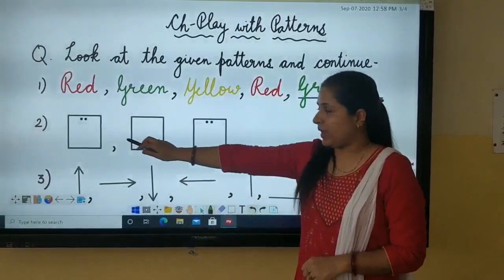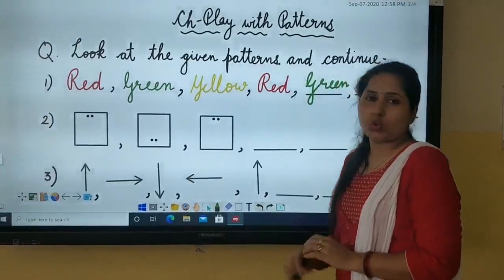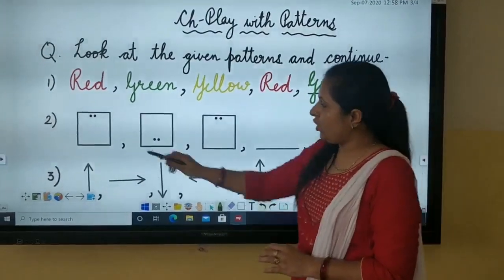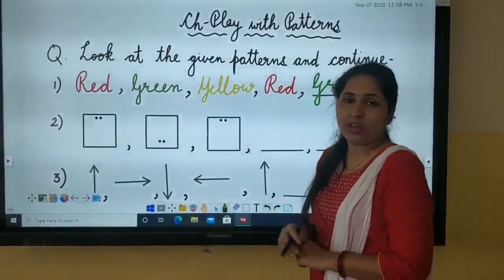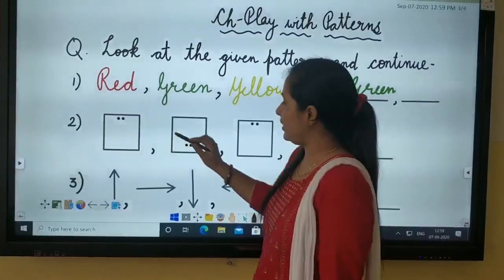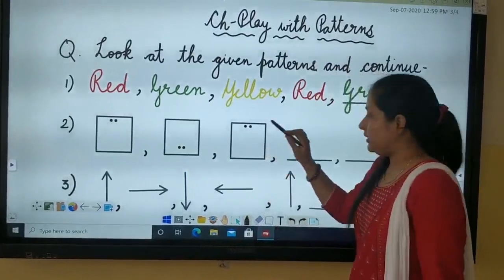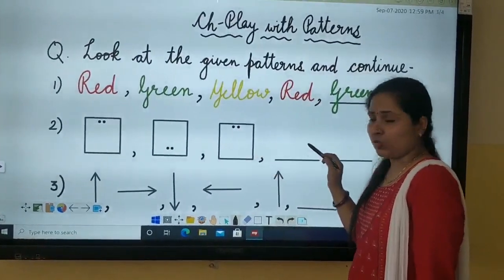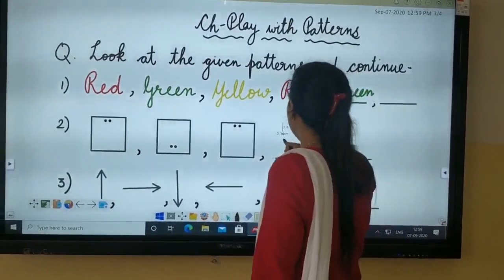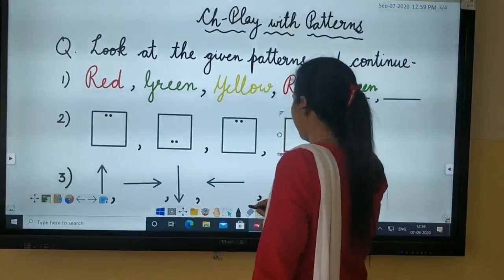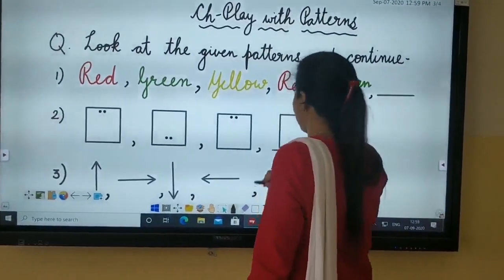Then next one is second pattern. Here are a few squares given for you. All of these are same. But when you will observe it carefully, you will see it is up, then down, then up, then it would be here, down. So you will draw a square here, where the dots would be in downward direction like this. Similarly you can complete this pattern.